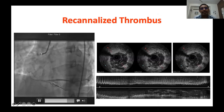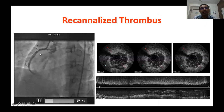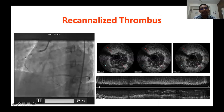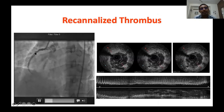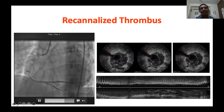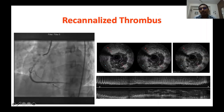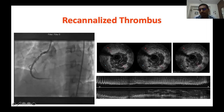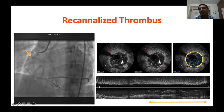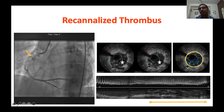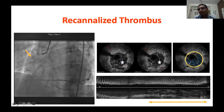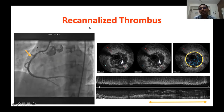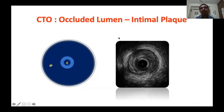Here you can see an angiogram showing multiple flap-like appearances — we used to call this spontaneous coronary dissection, but with IVUS and OCT imaging we now know that most of these are recanalized thrombi. A recanalized thrombus is an intraluminal mass with multiple channels — typically called a lotus root or Swiss cheese appearance. Here is the longitudinal view showing multiple channels — the typical appearance of recanalized thrombus.